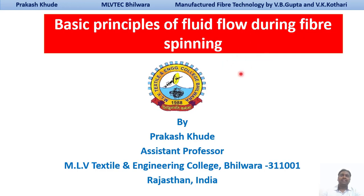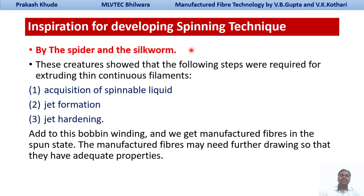We will see how we can get the inspiration for the different spinning technologies. The inspiration for developing spinning techniques comes from the spider and silkworm. These creatures have showed us the following steps required for extruding thin continuous filaments: first, acquisition of a spinnable liquid like dope formation in wet and dry spinning and melt spinning; second, jet formation — extrusion of the polymeric fluid; and third, jet hardening. Adding to this, bobbin winding gives us the finally manufactured fiber in the spun state.